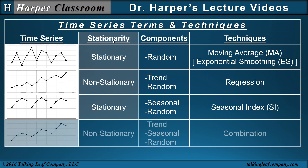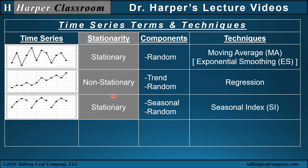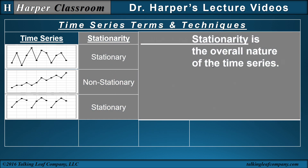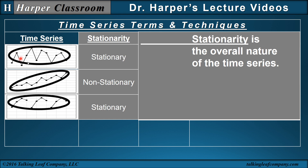Let's start with stationarity. Stationarity is the overall nature of the time series. When you look at the overall nature of these three time series, the first one is level, so it's stationary. The second one is non-level because it's increasing — that would be non-stationary. The third one is level; even though there's variability, it's still stationary.